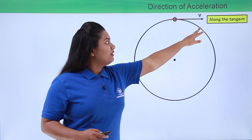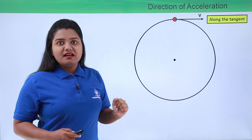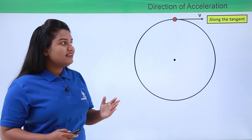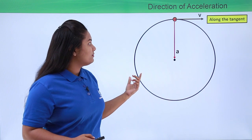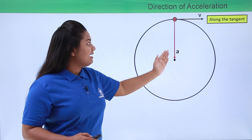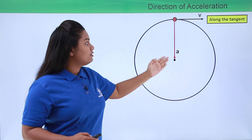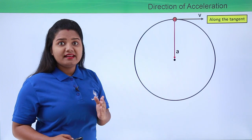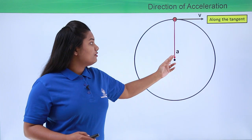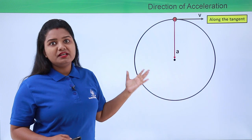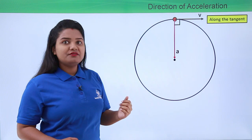The direction of velocity is along the tangent at this point of the circular path. The direction of acceleration is along the radius of the circular path at this point, directed towards the center. We can clearly see that the direction of acceleration is exactly perpendicular to the direction of velocity, since the velocity is along the tangent which is perpendicular to the radius.